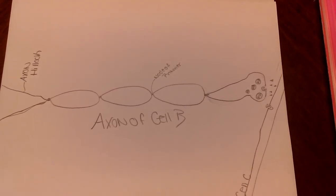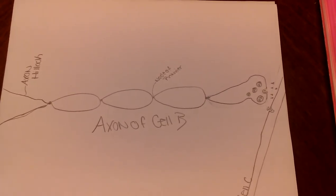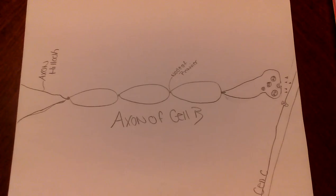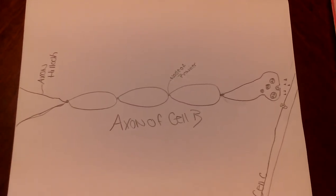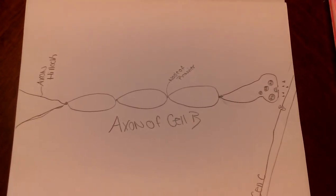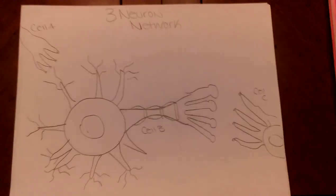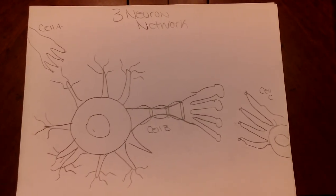The vesicles that move to the presynaptic membrane merge with the membrane and then create an omega complex. After creating the omega complex, the neurotransmitter molecules are emptied into the synapse of cell B and cell C, which starts the process all over again.